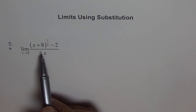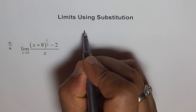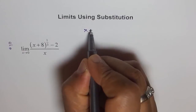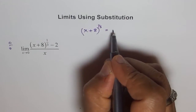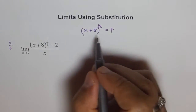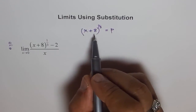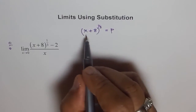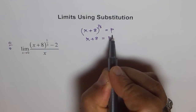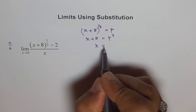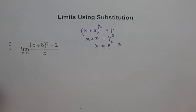What we will do here is substitute this part as something. For example, let x plus 8 to the power of 1 over 3 equal p. In that case, we solve for x: x plus 8 equals p cubed, and therefore x equals p cubed minus 8.